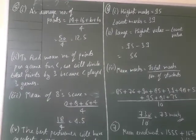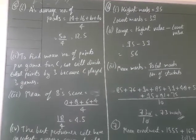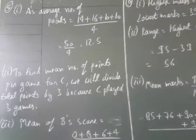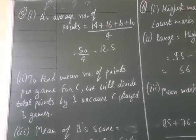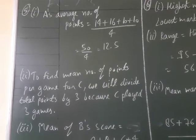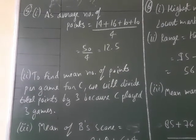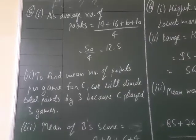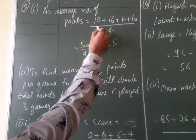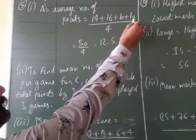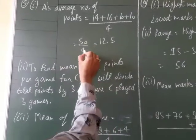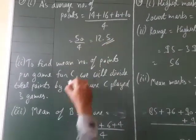Fifth question: a table shows the points of each player scored in 4 games. Players A, B, and C have played 4 games and their scores are given. To find mean points per game for player A: (14+16+10+10) divided by 4 = 50 divided by 4 = 12.5.